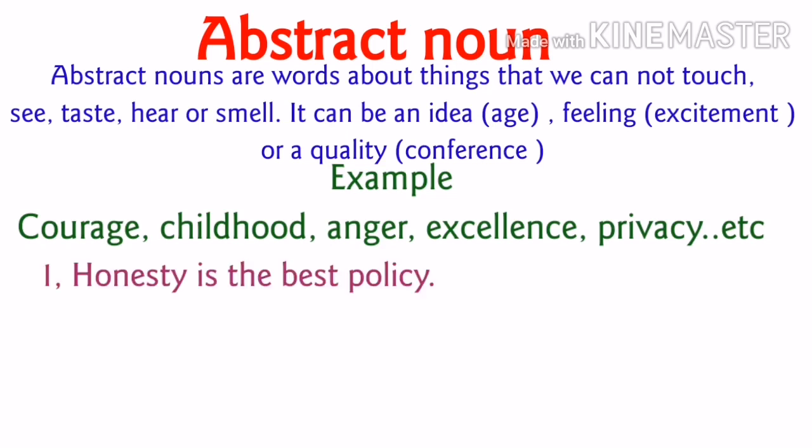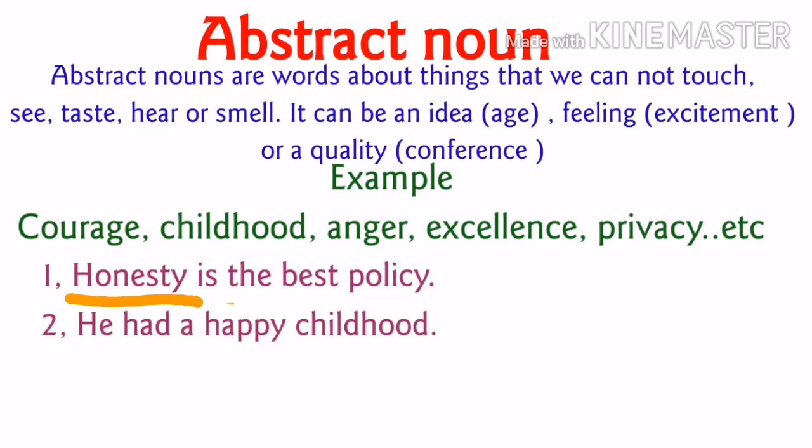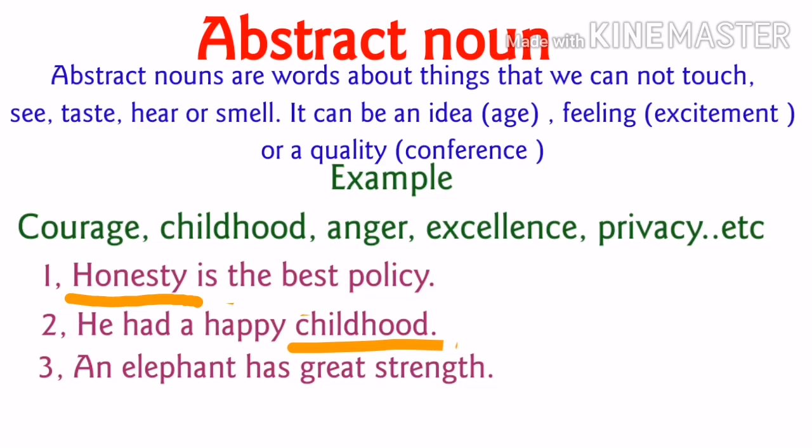See the first sentence: Honesty is the best policy. Honesty is truthfulness which we cannot touch, see, taste, hear or smell, so that is an abstract noun. Next sentence: He had a happy childhood. Childhood is the abstract noun here — it is a period of time that happened in the past, so we cannot touch, smell or taste it. Next sentence: An elephant has great strength. The word strength is a quality, and we cannot touch, taste or smell strength, so that is an abstract noun.